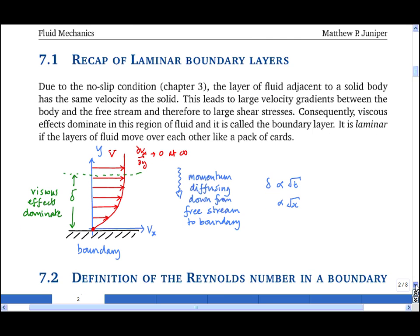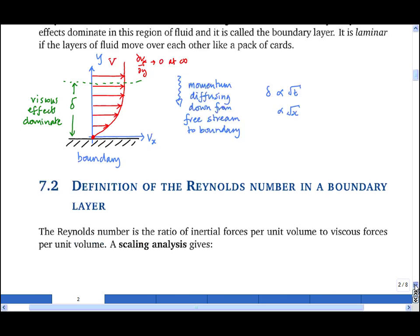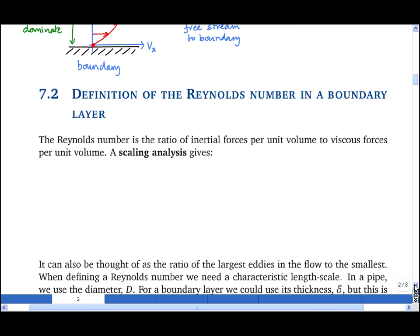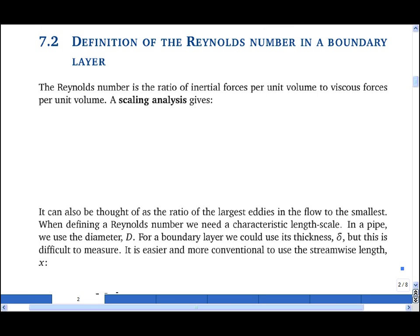In Chapter 5 on pipe flow, we met the Reynolds number. It was defined there as rho vd upon mu, where d is the diameter of the pipe and v is the average velocity in the pipe. We can define the Reynolds number in a boundary layer too, but we need to use a slightly different definition.